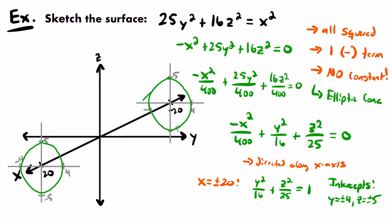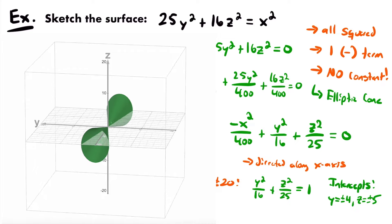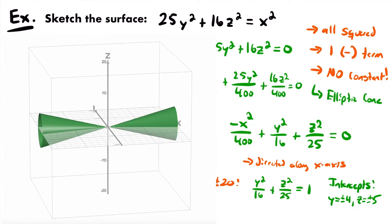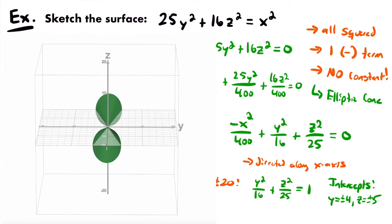Draw the lines connecting from the ellipses through the origin. There you have it — that is our elliptic cone. Shade it in to help it pop off the page. That is the final sketch of this elliptic cone. Here's a 3D render of what it actually looks like in 3D space — pretty close to our sketch.